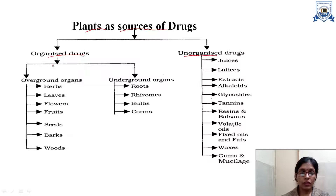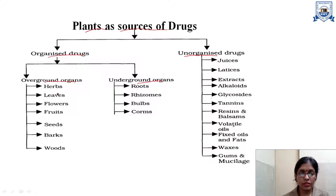The organized drugs can be classified under two heads: overground organs or underground organs. In overground organs — the organs that are present above the ground — we have herbs, leaves, flowers, fruits, seeds, barks and woods.